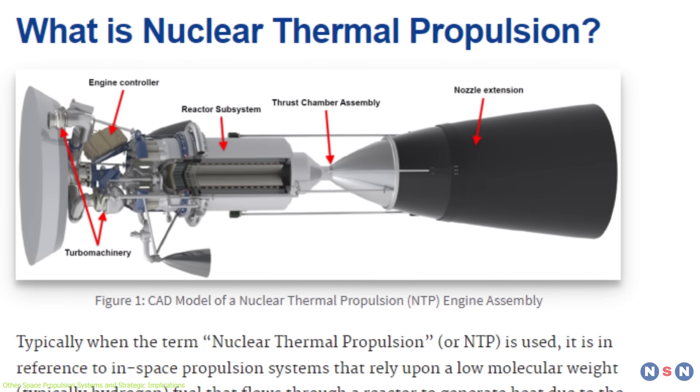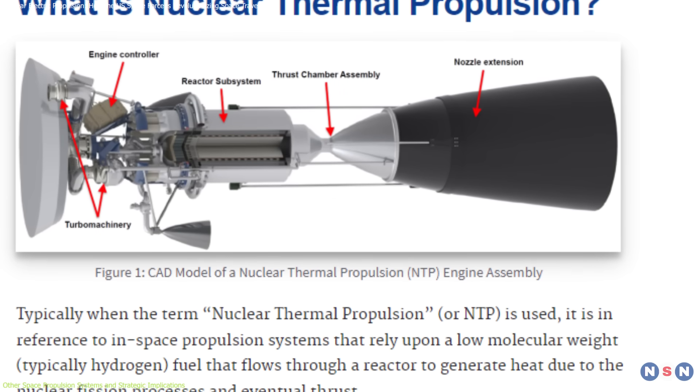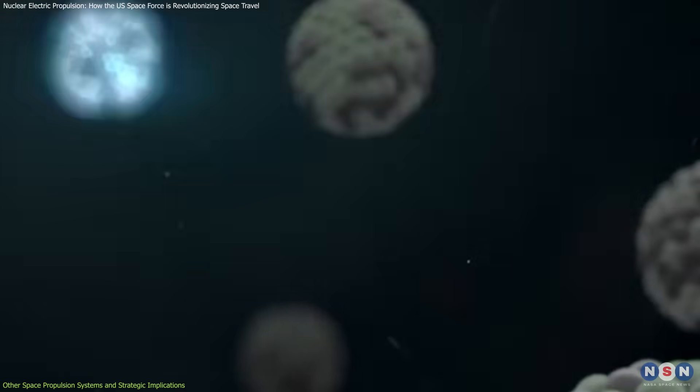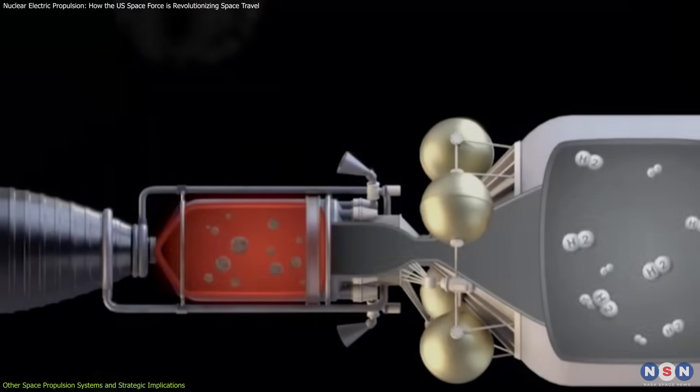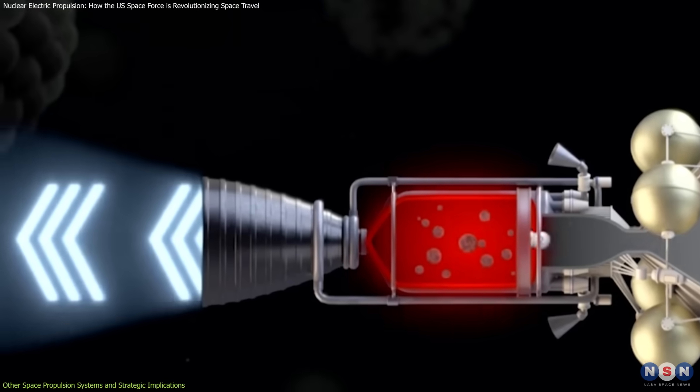One notable competitor is Nuclear Thermal Propulsion, NTP, a technology that uses a nuclear reactor to heat a propellant like hydrogen. The heated gas expands rapidly, creating thrust.